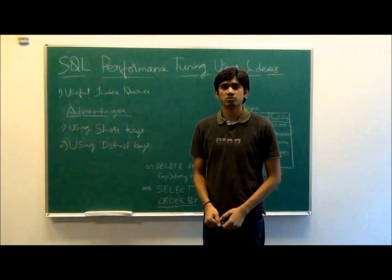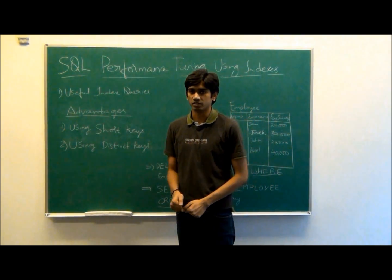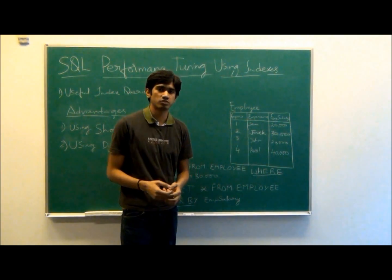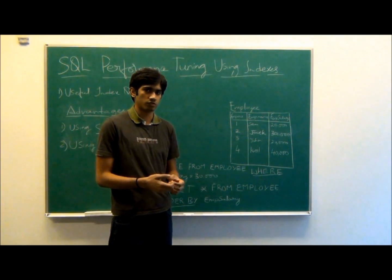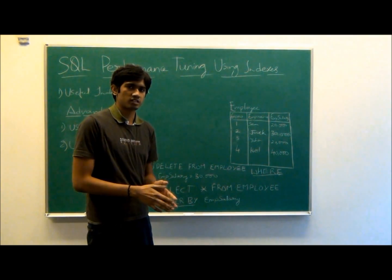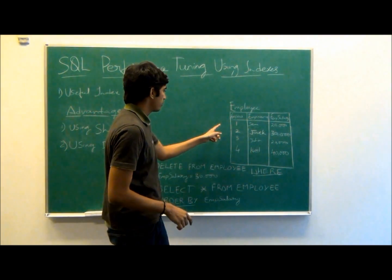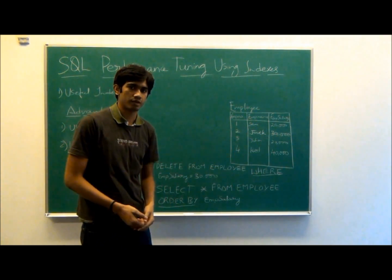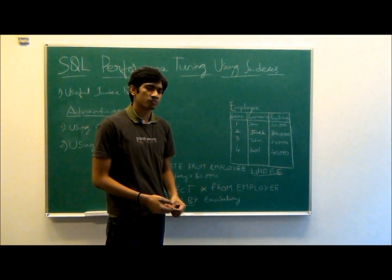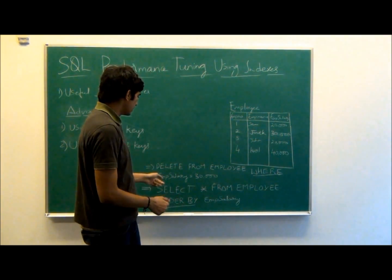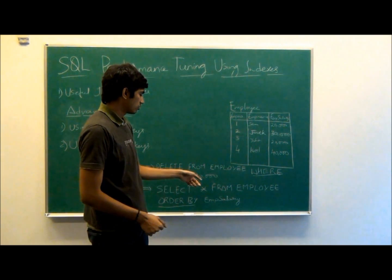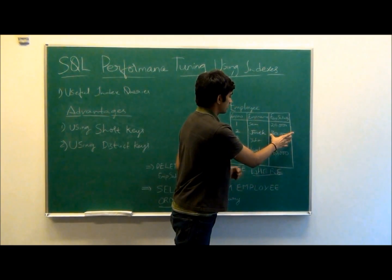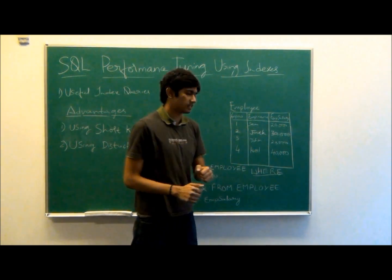The most important job for the database is to find the best index. The first one is useful index queries. Indexes help when you are processing for a specific record or a set of records with a WHERE clause. For example, consider the query on the employee table where employee number, employee name, and employee salary are the columns. Consider the query: DELETE FROM employee WHERE employee salary equals 30,000. Here the employee salary column has been selected and that particular row will be deleted.